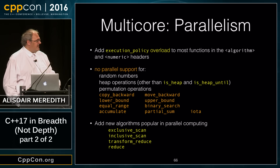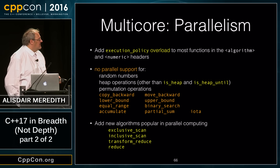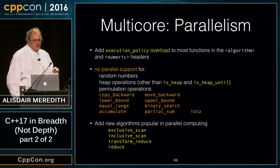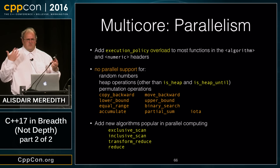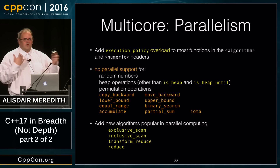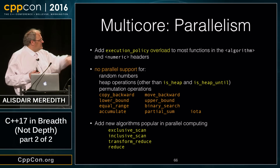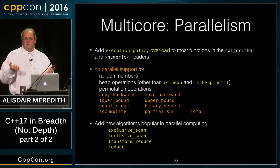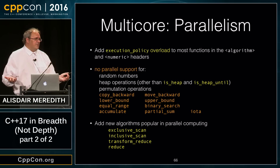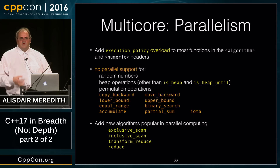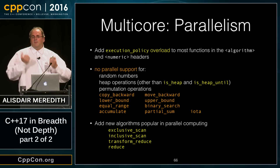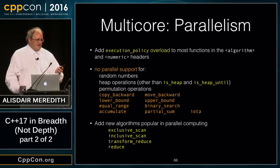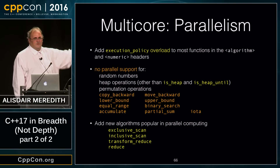We add four new algorithms to the numeric header: exclusive_scan, inclusive_scan, transform_reduce, and reduce. Some of these will resonate if you know map-reduce. Inclusive and exclusive scan are terms of art from the high-performance computing community — if they resonate with you, they're probably what you think they mean; otherwise, read the spec.